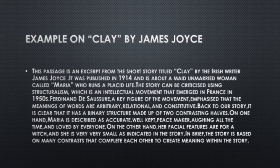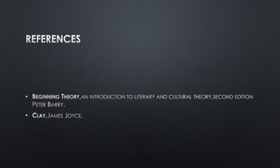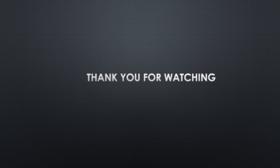Back to our story, it is clear that it has a binary structure made up of two contrasting halves. On the one hand, Maria is described as accurate, well-kept, a peacemaker loved by everyone. On the other hand, her facial features are compared to those of a witch and she is very small, as indicated in the story. In brief, the story is based on many contrasts that complete each other to create meaning. Here is the analysis we have completed for structuralism applied to Clay by James Joyce. Thanks for watching and good luck.